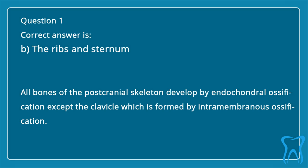Correct answer is b. The ribs and sternum. All bones of the post-cranial skeleton develop by endochondral ossification except the clavicle, which is formed by intramembranous ossification.